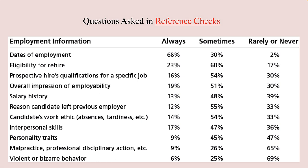On this slide, we see the sorts of information typically and sometimes non-typically asked of references. Only 2% of the time does a company not ask about an applicant's dates of employment — 68% of companies always ask that. Further down the list, over half of the time a company inquires either always or sometimes about an applicant's personality. At the bottom of the list, violent or bizarre behavior is never or rarely asked about, perhaps because such behavior is so infrequent that the answer is almost always no. Asking about personality is difficult because naive subjective assessments can be far from the truth — measuring personality via a validated instrument is recommended.